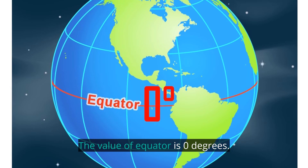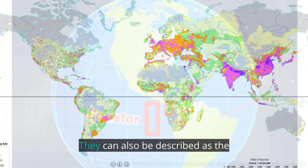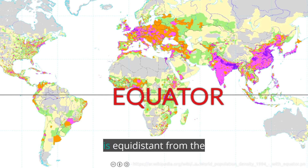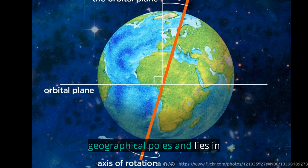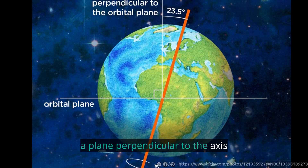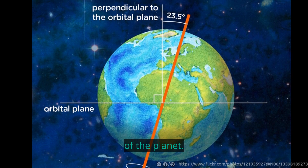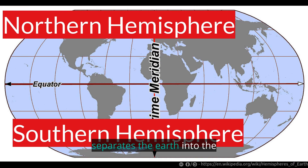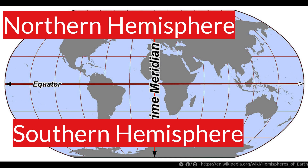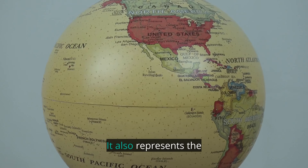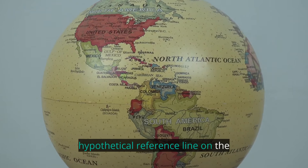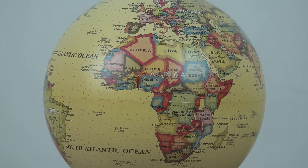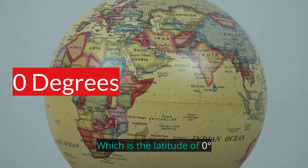The value of the equator is zero degrees. It can also be described as the great ring around the planet that is equidistant from the geographical poles and lies in a plane perpendicular to the axis of the planet. This hypothetical line separates the earth into the northern and southern hemispheres, and also represents the hypothetical reference line on the surface of the earth on which latitudes are measured. It's the latitude of zero degrees.